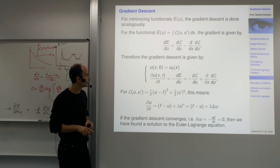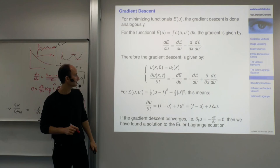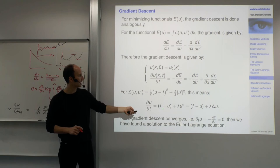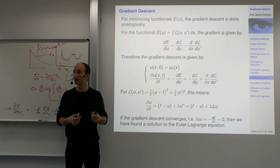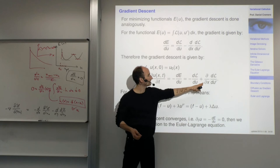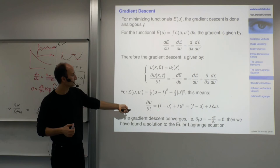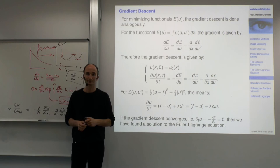Let's look at the denoising example: u minus f squared plus lambda over 2 times u prime squared. Plugging the functional gradient into the gradient descent equation, we get du by dt equals f minus u plus lambda u double prime. In the general 2D or 3D case, you get additional terms d by dy of dL by du_y, and in general the second derivative in more dimensions is nothing but the Laplacian.